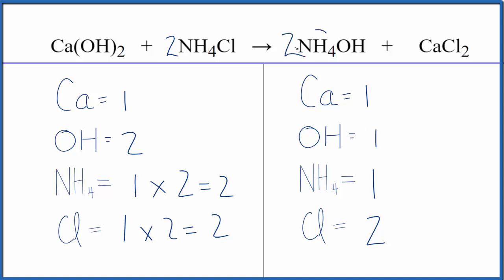If we put a two here, one ammonium times two, that'll give us two. Those are balanced. The hydroxide times two, that gives us two of those. We're done. This equation is balanced.